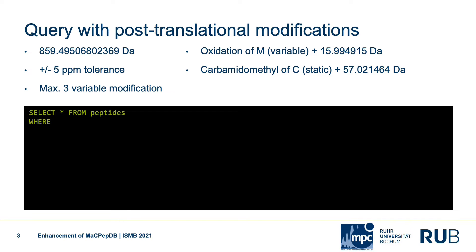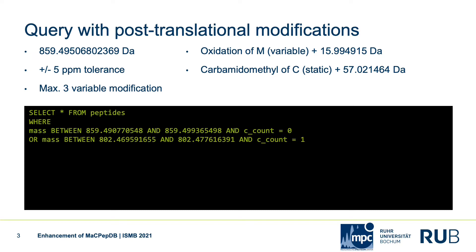Now we have to consider the impact of all combinations of the two modifications on our targeted mass. For the first combination, we have to make sure no C is contained in the peptide sequences, because each C would increase our mass by 57 Dalton. The next combination will allow exactly one C in the peptide sequence but decreases the queried mass by one carbamidomethylation of C to match our targeted mass again.